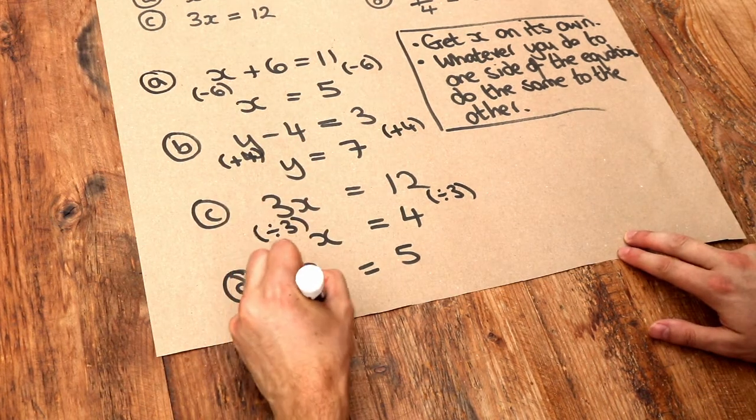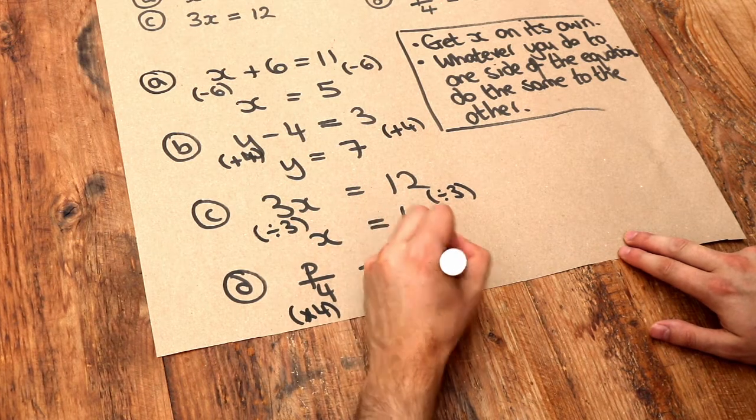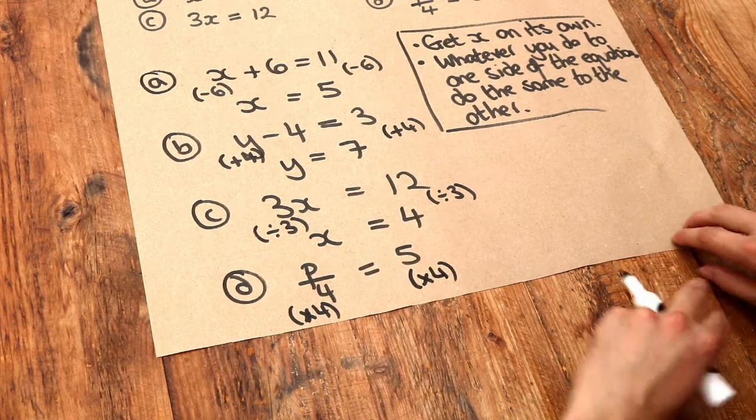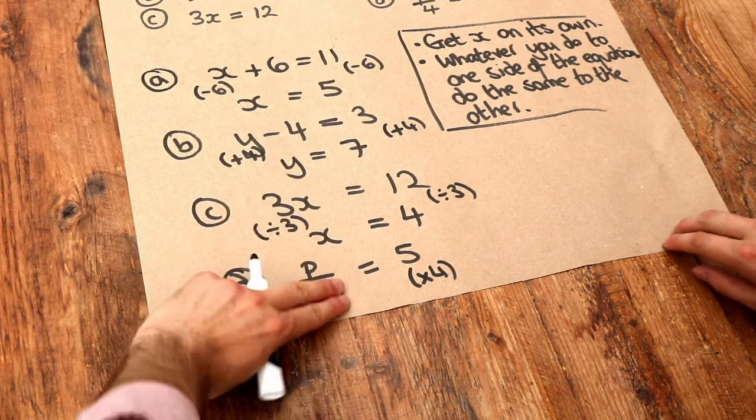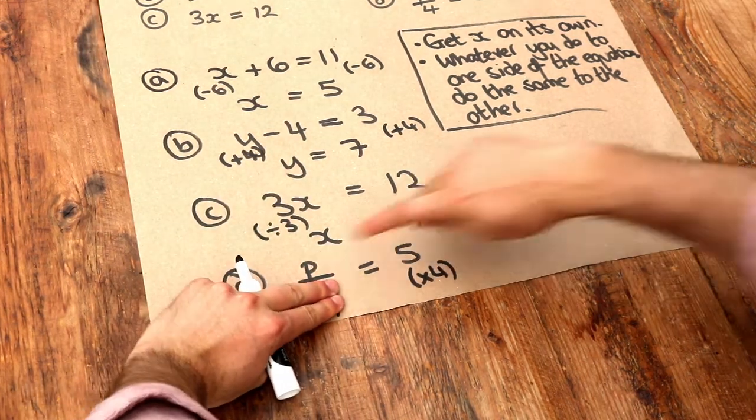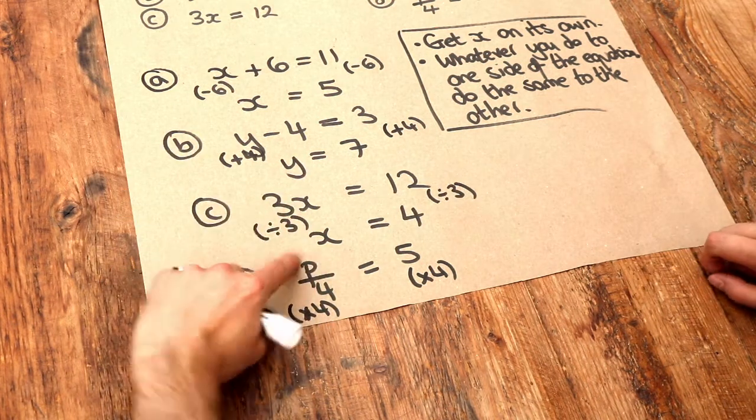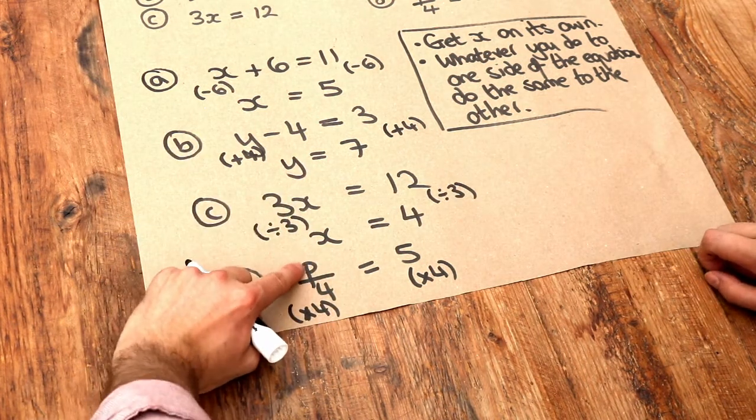So if we times the left-hand side by 4, we've also got to times the right-hand side of the equation by 4. So p divided by 4 times by 4. The divide by 4 and times by 4 cancel each other out, just leaving p. If that's not clear, just think if that was an actual number. Imagine p was 12.